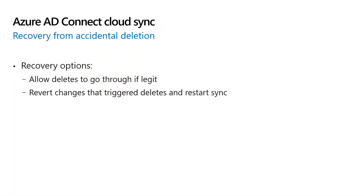I am going to go over how to enable and configure this feature in detail shortly. Now let's talk about recovery. Once your job is put into quarantine, you must inspect all the deletes and determine if they are legit or not. If the deletes are legit, you can go back to your configuration and allow these deletes to go through — all these deletes will be performed in Azure Active Directory in the next sync cycle. However, in the case where the deletes are actually accidental, you can revert the changes that triggered these deletes and restart sync. All the objects will be restored correctly in Azure Active Directory in the next sync cycle.